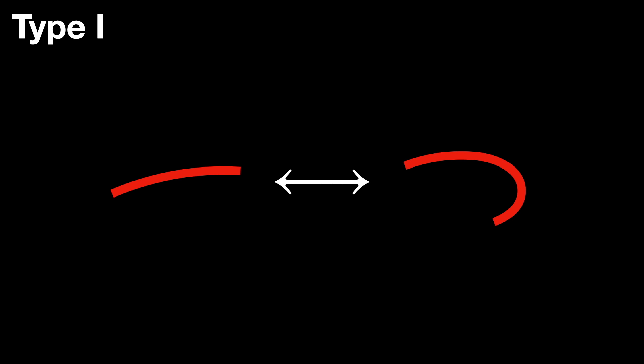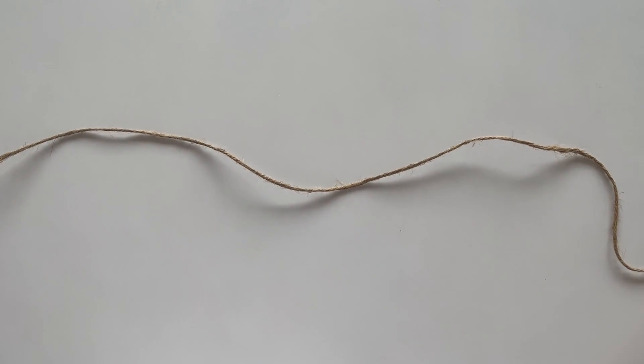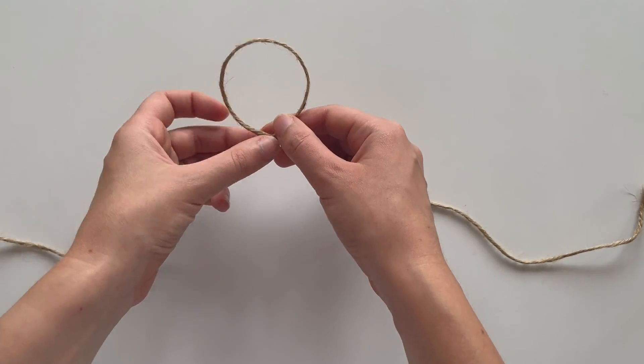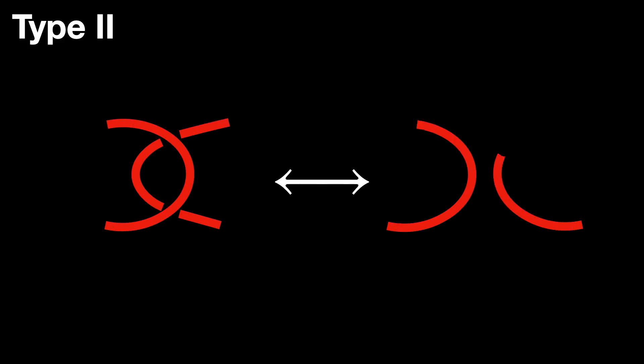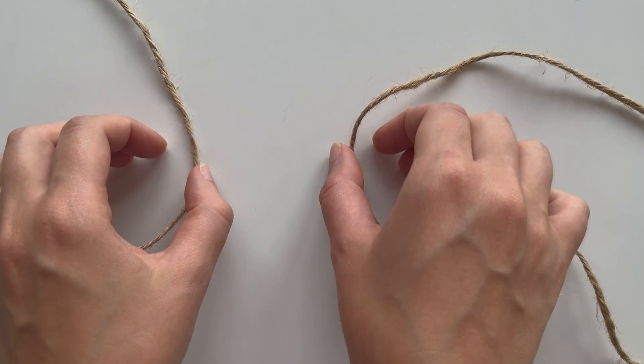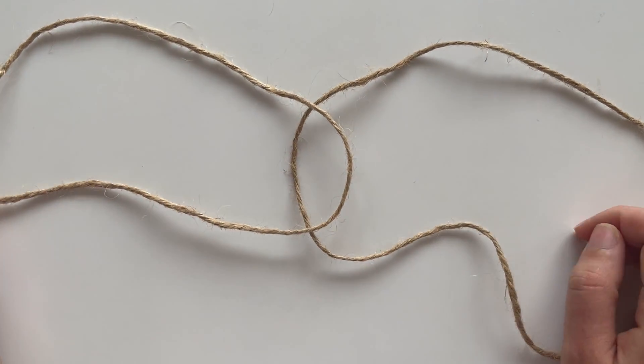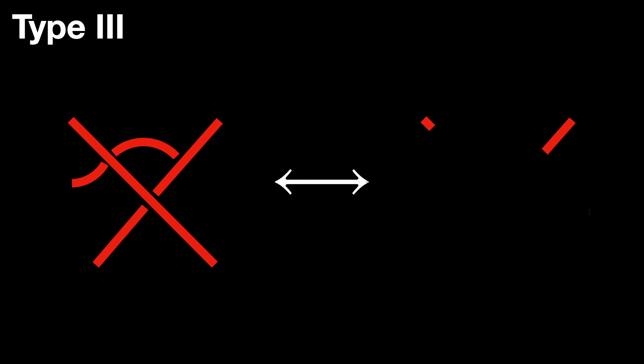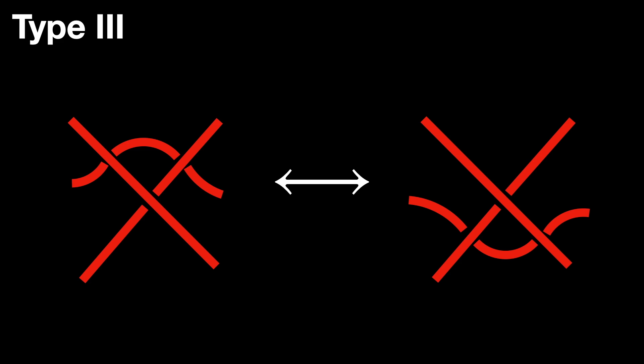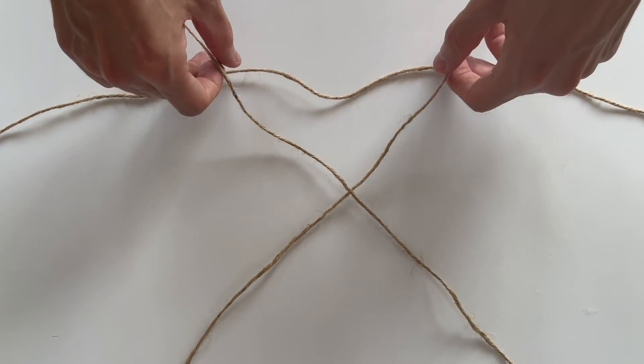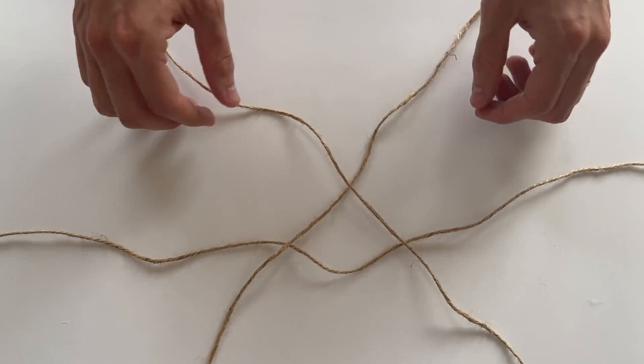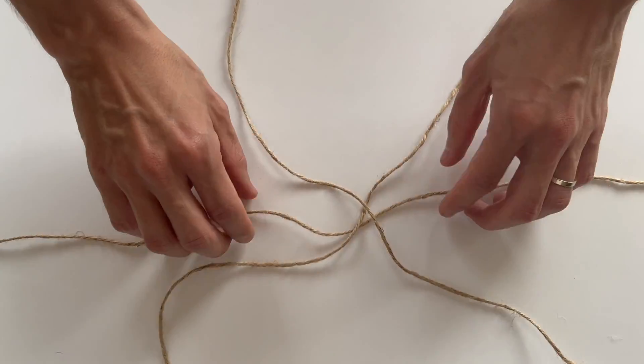Riedmeister identified three basic operations that can be applied to these diagrams. Type 1 move. This move involves creating or removing a single twist in a strand of the knot. Imagine taking a small section of the rope and twisting it to form a loop where the rope crosses over or under itself. Type 2 move. This move involves two adjacent strands that can be passed over or under each other. Essentially, you take two parallel strands and either separate them by pulling one over the other, or bring them together so one crosses the other.